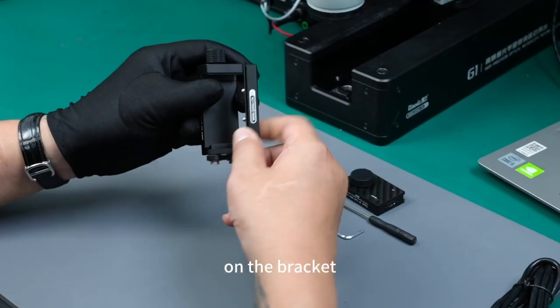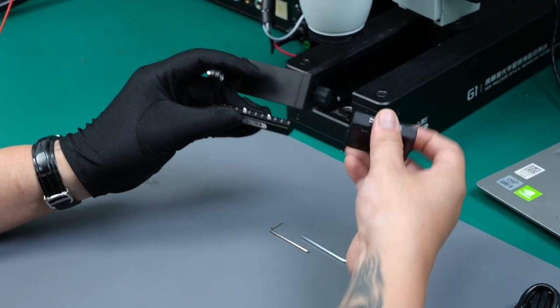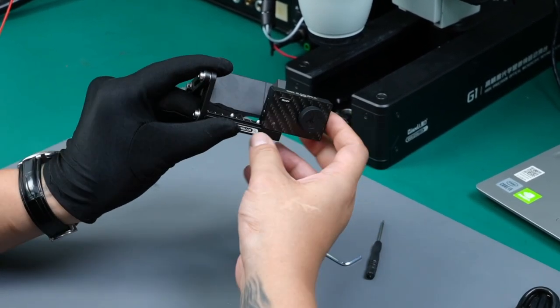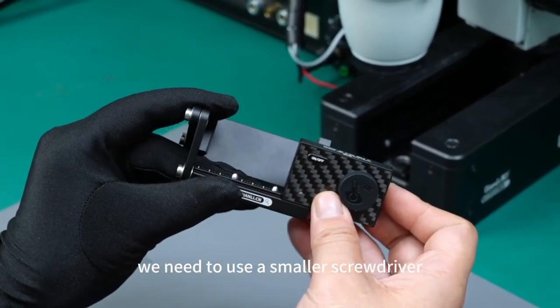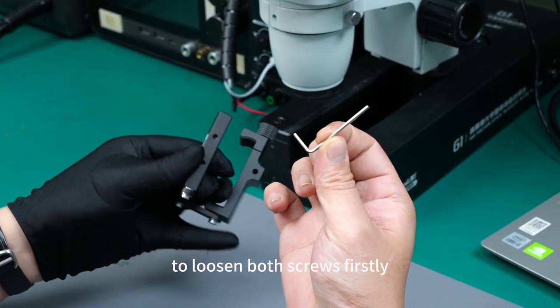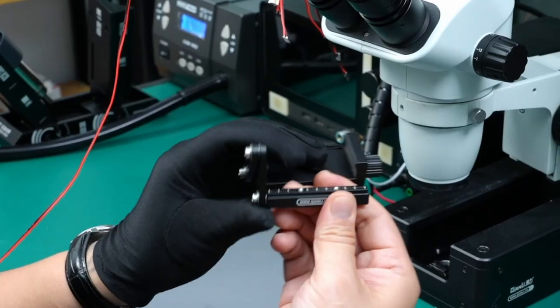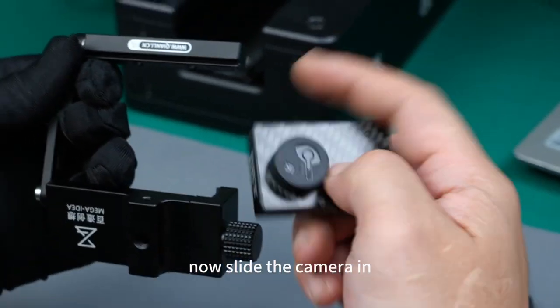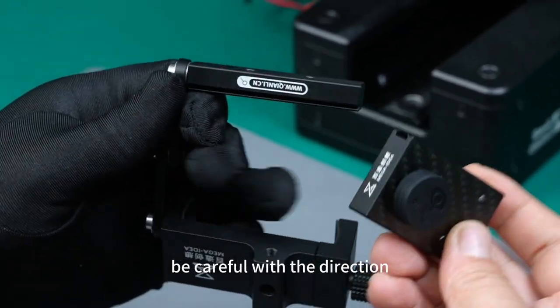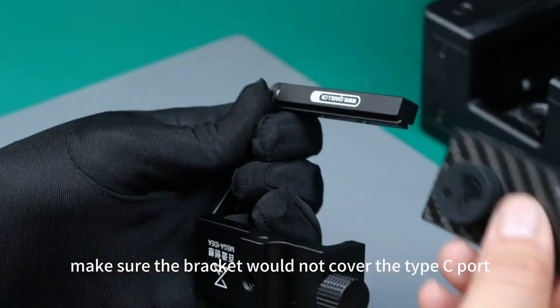On the bracket, you can find a slot where we slide the camera in. In order to do so, we need to use a smaller screwdriver to loosen both screws first. Now, slide the camera in. Be careful with the direction, make sure the bracket does not cover the Type-C port.